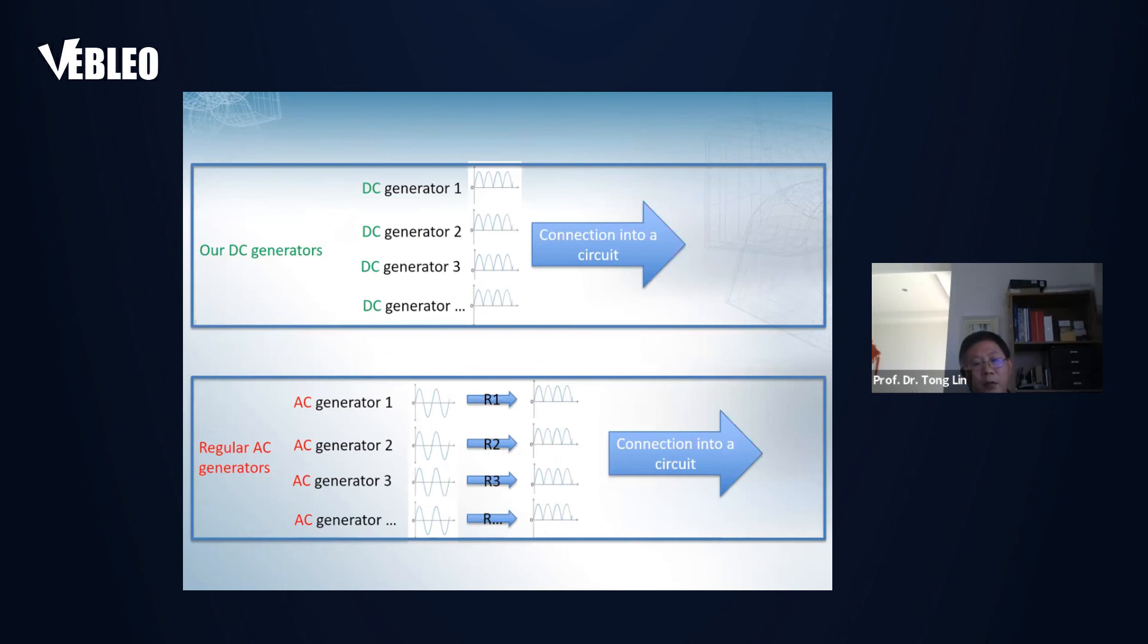The key advantage of DC generator is they can group together very easily, like a battery. If you just pay attention to the polarity, make sure the polarity is in the same direction, multiple devices can be linked in series and in parallel very easily.